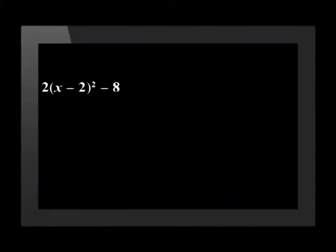Let's do another example together. Simplify 2(x - 2)² minus 8. Step one says to look for a common factor. Let's start by taking out a common factor of 2, leaving us with 2[(x - 2)² - 4].